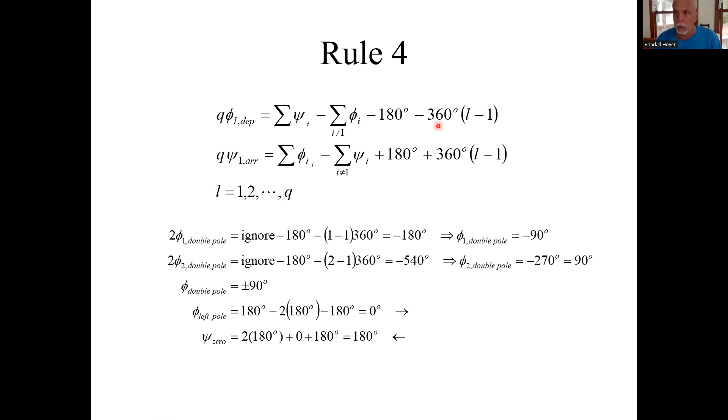For the other repeated pole, it's everything the same except this L will be 2. So we get 2 minus 1 or 1 minus 360. So I have minus 180 minus 360, which is minus 540. Divide that by 2, you get minus 270, which is just 90. So coming out of that double pole, the departure angles are straight up and straight down, plus or minus 90.